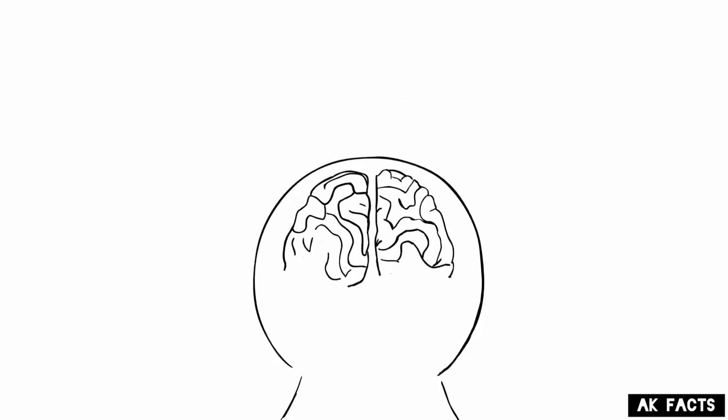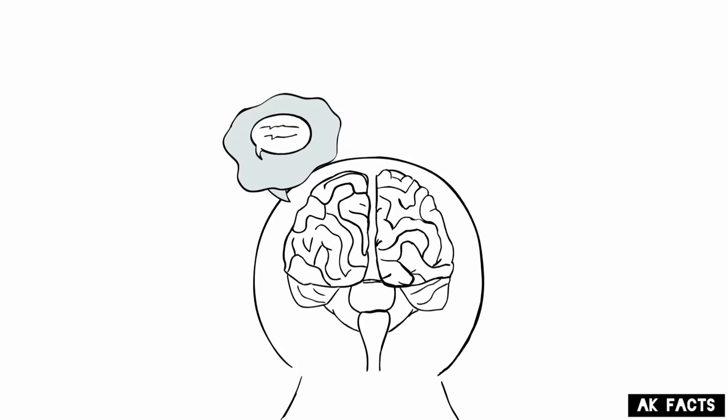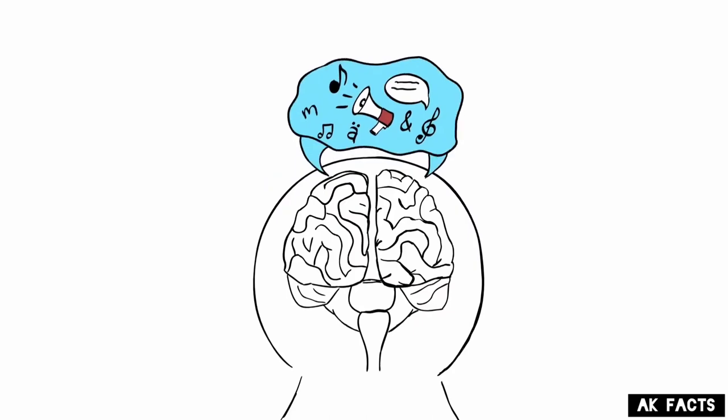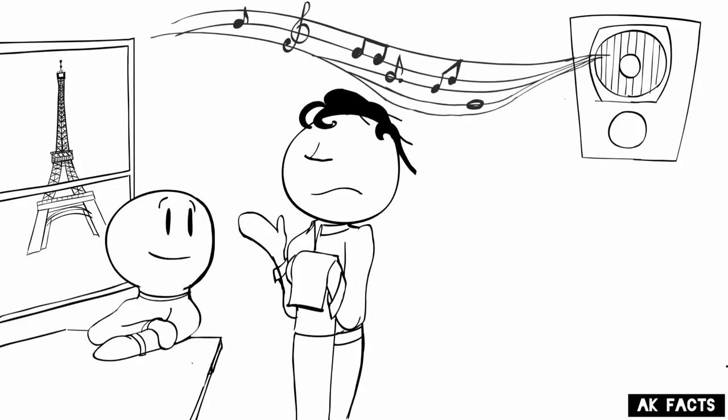Traditionally, speech functions were thought to exist in the left hemisphere of the brain, while music functions existed in the right hemisphere. But today, it's widely accepted that both hemispheres are responsible for music and speech. What this means is that music functions can actually improve speech functions, and vice versa. In a sense, both activities are working the same muscle.